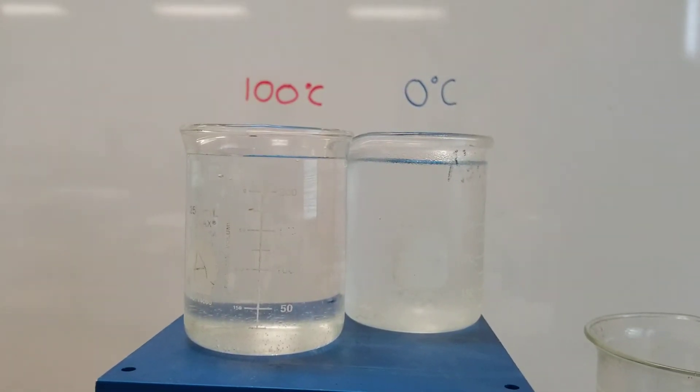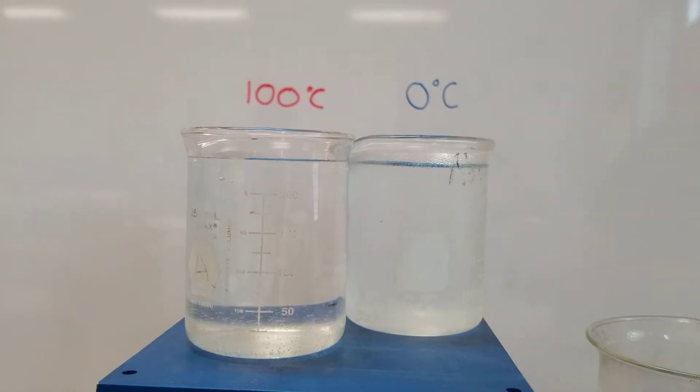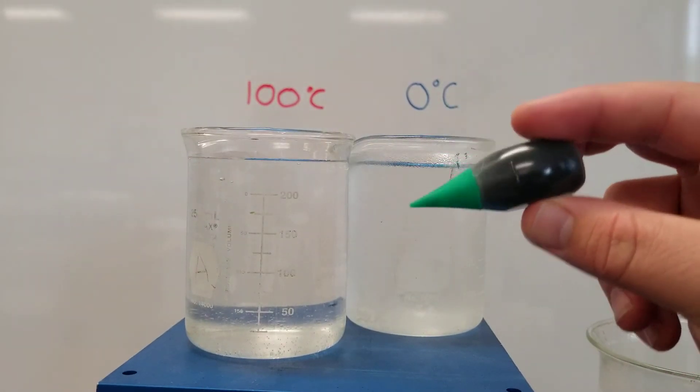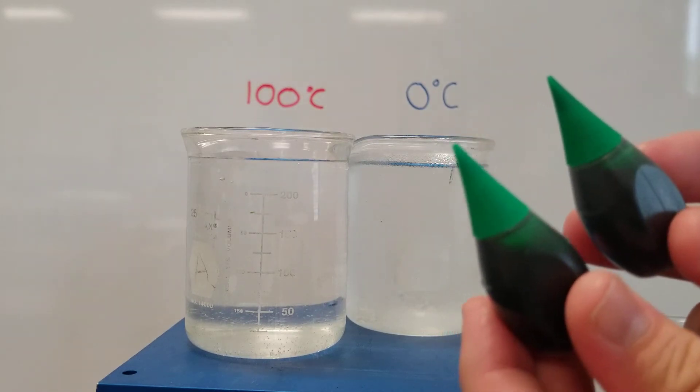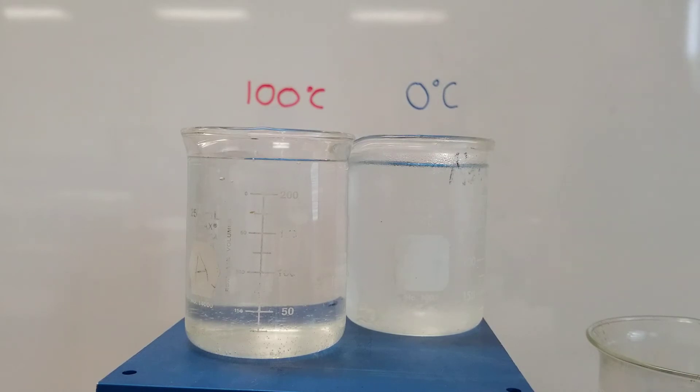So what I'm going to do to demonstrate how the atoms and molecules inside each beaker are moving differently is I'm going to drop in some food coloring. And I've got two things of food coloring, and they're identical to each other. And so I'm going to drop them in simultaneously, and then your job is to observe and see what happens.